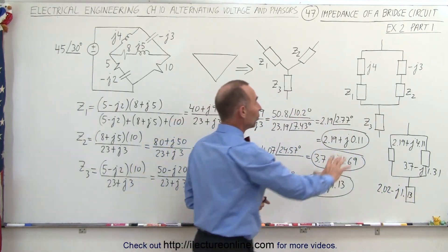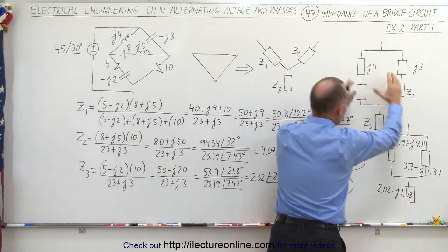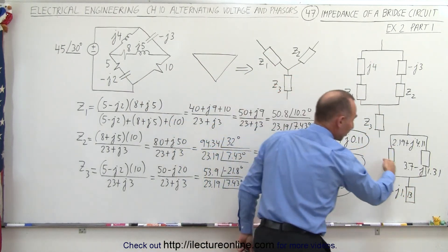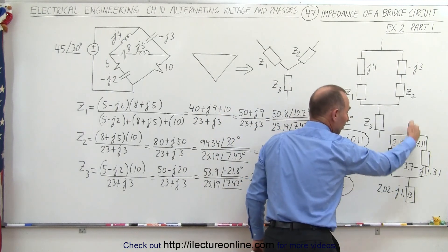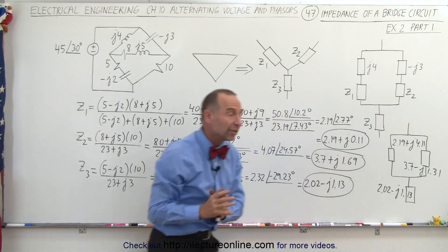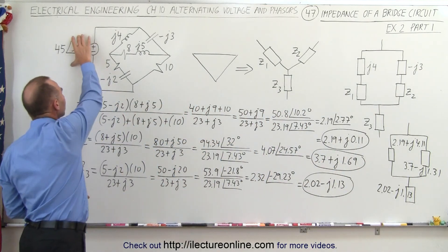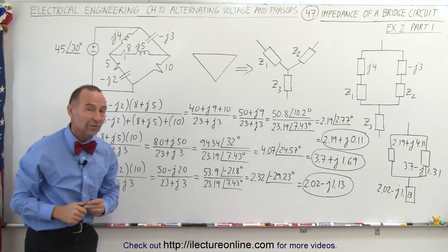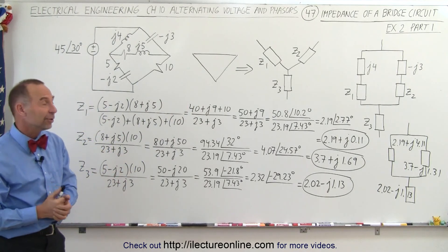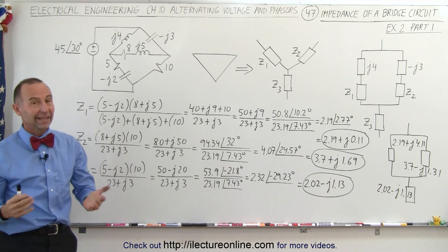So now we have this whole bridge circuit simplified into a format we can continue with in the next video. We need to combine these two into a single impedance, add those two together in series, then we have the total impedance. Once we have the total impedance, we know the current is equal to the voltage divided by the total impedance. Take a look at the next video, and we'll have the final solution to this problem. And that's how it's done.